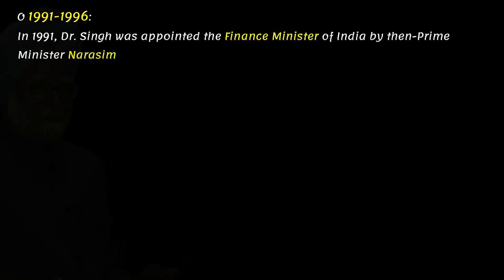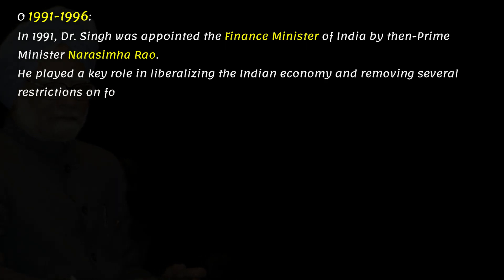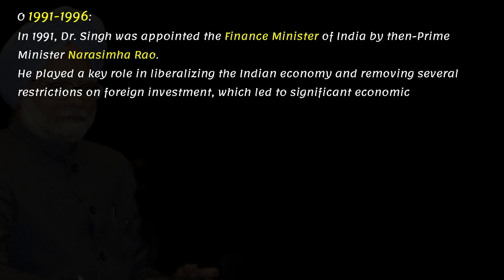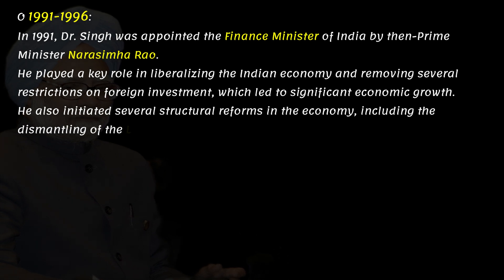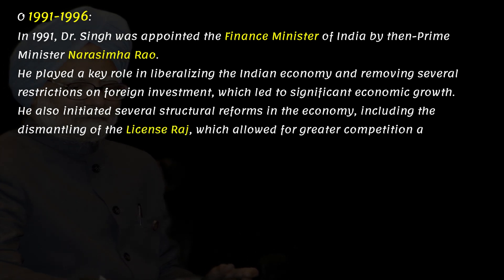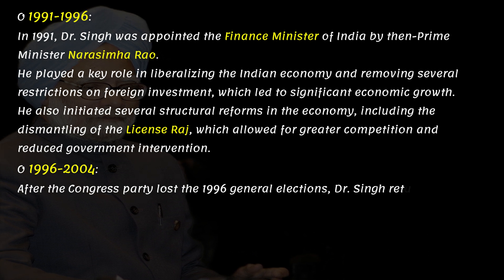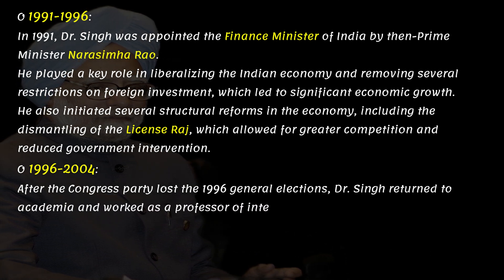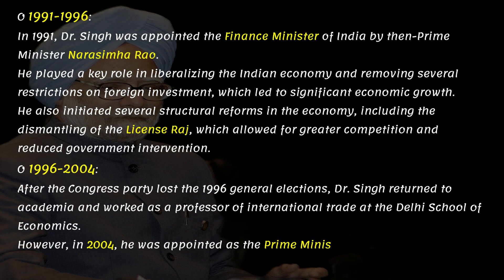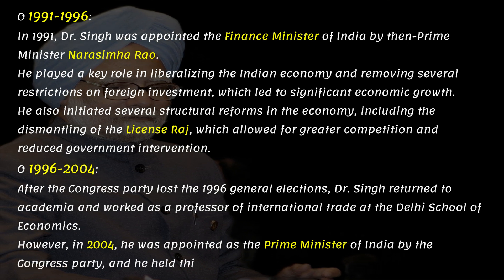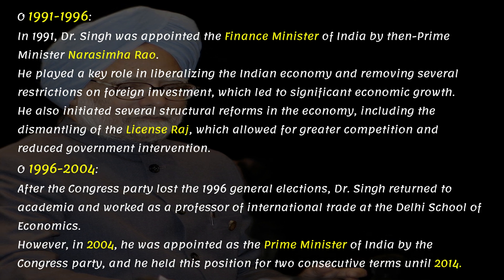In 1991, Dr. Singh was appointed the Finance Minister of India by then-Prime Minister Narasimha Rao. He played a key role in liberalizing the Indian economy and removing several restrictions on foreign investment, which led to significant economic growth. He also initiated several structural reforms, including the dismantling of the License Raj, which allowed for greater competition and reduced government intervention. After the Congress party lost the 1996 general elections, Dr. Singh returned to academia and worked as a professor of international trade at the Delhi School of Economics. However, in 2004, he was appointed as the Prime Minister of India, holding this position for two consecutive terms until 2014.